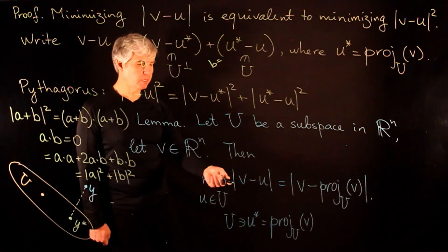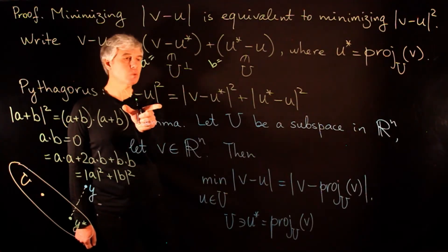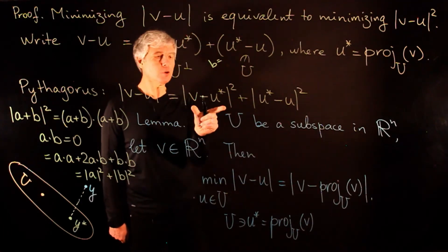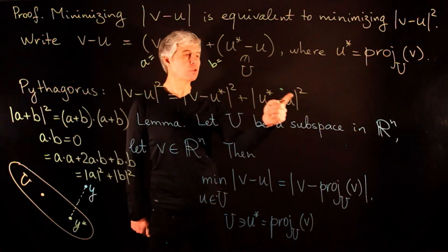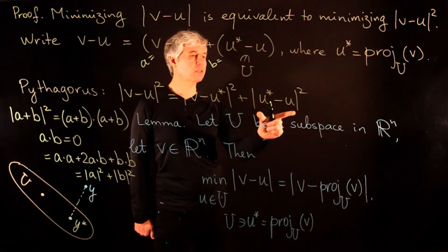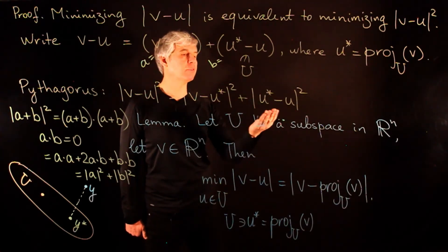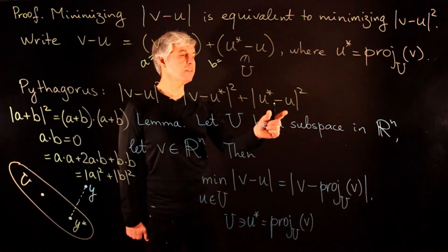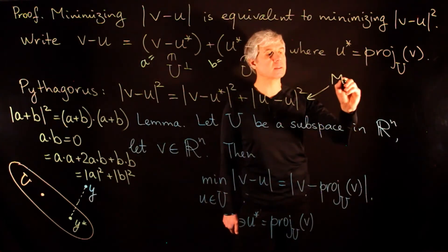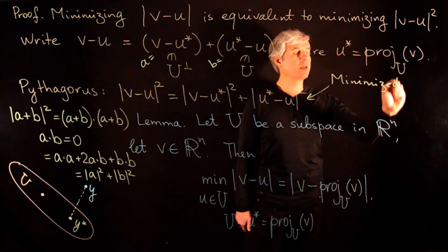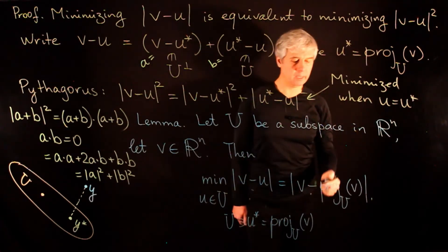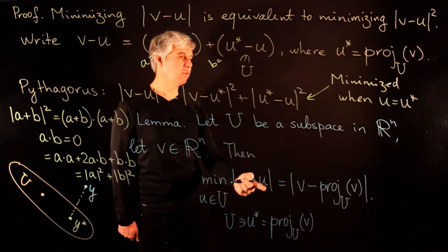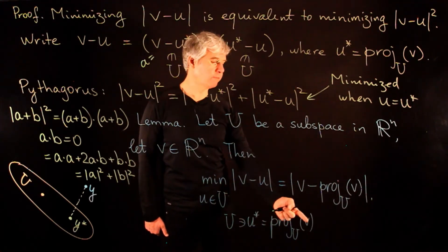Returning to the proof: we need to minimize the squared norm of v minus u. The first term, the squared length of v minus u-star, is fixed since u-star is the projection of v onto U. As we vary u, only the second term changes. Since the squared length of u-star minus u is always non-negative, it is minimized by setting u equal to u-star. This proves that the distance from v to u is minimized when u equals the projection of v onto the subspace U.